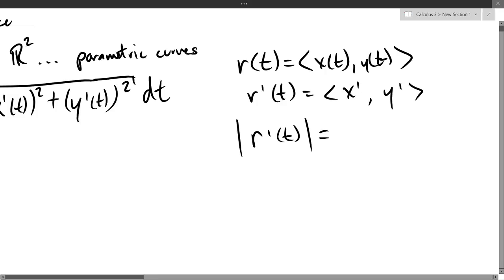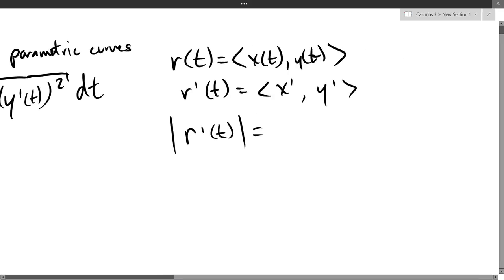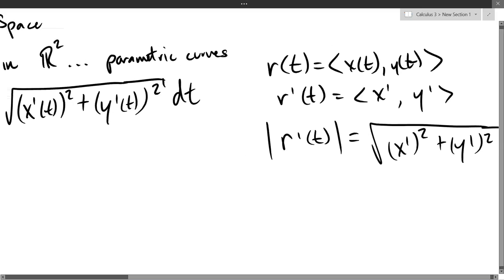So, that's r prime t. What is the magnitude of r prime of t? Square root of x prime squared plus y prime squared. Oh, that's really familiar in the arc length, isn't it? Oh, look at that. It's right there.